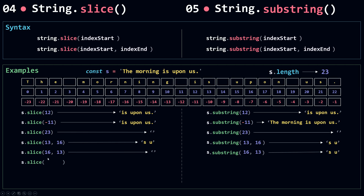If I use minus 8 as the index start and minus 4 as the index end, slice goes backward — starting from minus 8 and stopping at minus 5, since minus 4 is not included — returning 'upon'. For substring, both negative numbers are treated as zero, so it starts at zero and ends at zero, returning an empty string.